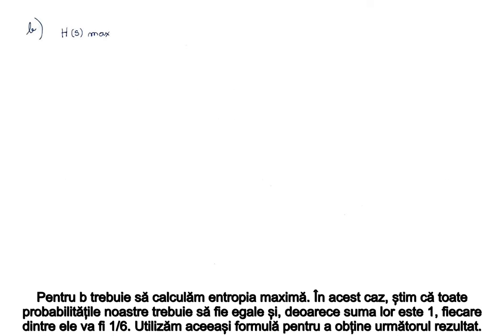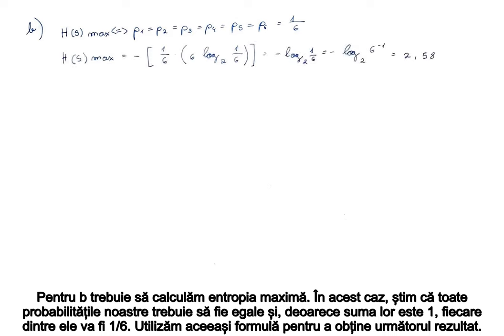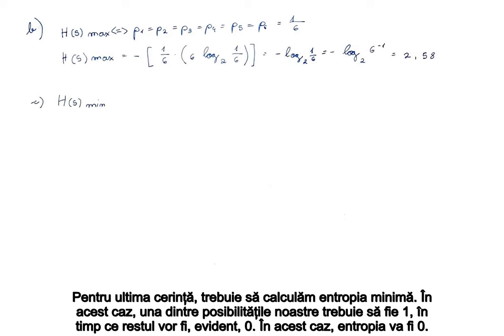For B, we have to compute the maximum entropy. In this case, we know that all of our probabilities need to be equal, and because their sum is 1, each of them will be 1 over 6. We use the same formula to get the following result. For the last requirement, we have to compute the minimum entropy. In this case, one of our probabilities has to be 1, while the rest will obviously be 0, so the entropy will be 0.